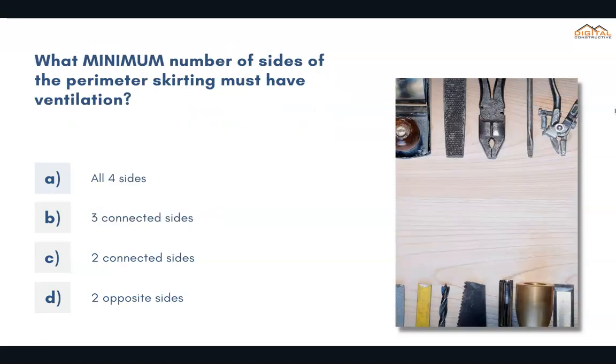What minimum number of sides of the perimeter skirting must have ventilation? The correct answer is D, two opposite sides.